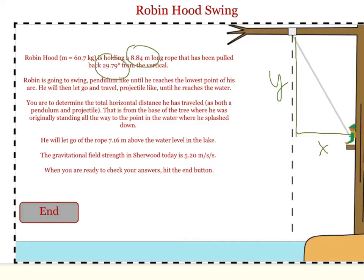The y component tells you how far Robin is below the tree branch at the start. When he reaches his lowest point, he will be exactly 8.84 meters below the tree branch, because that is the length of the rope, and the rope is hanging straight down.